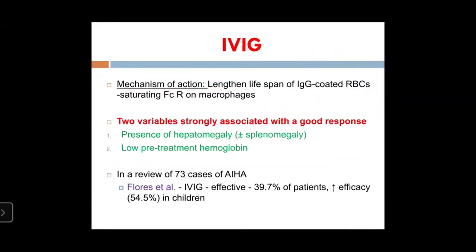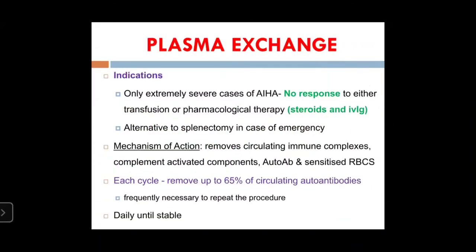Two variables strongly associated with good outcome on IVIG therapy are presence of hepatomegaly and low pre-treatment hemoglobin. IVIG effectiveness is about 40 percent compared to steroids at 80 percent. Plasma exchange is indicated in rare scenarios with no response to both steroids and IVIG — it removes about 65 percent of circulating autoantibodies and is done daily until the patient becomes hemodynamically stable.